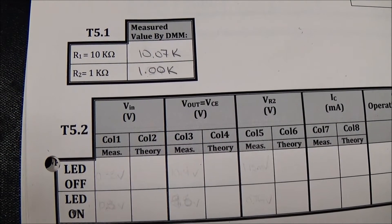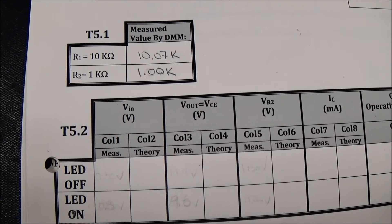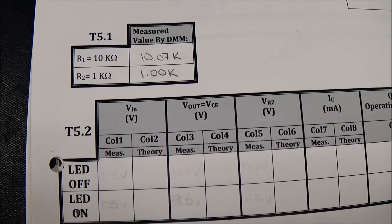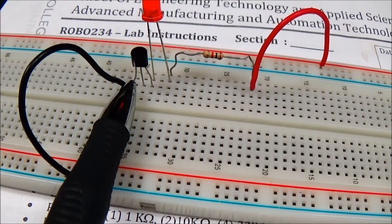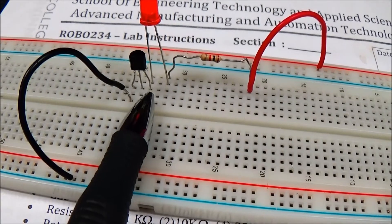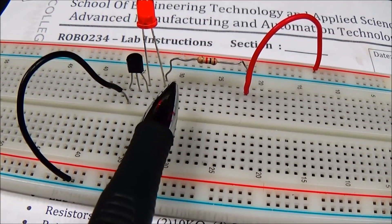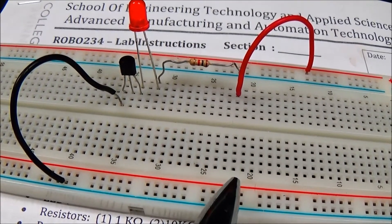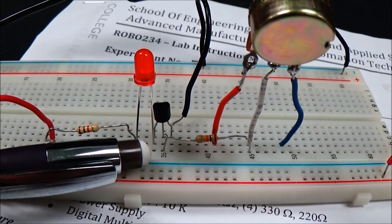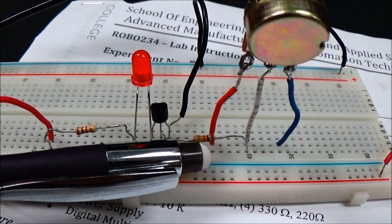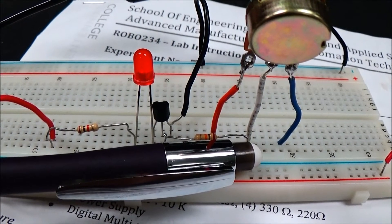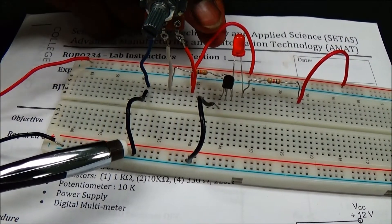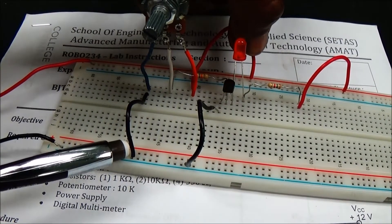Measuring R1 and R2: R1 is 10 kilohms, the measured value from the DMM is 10.07 kilohms. R2 is 1 kilohm and it measured exactly 1 kilohm. The transistor emitter is grounded, the collector is getting the negative of the LED, and the positive of the LED gets the 1 kilohm resistance. The other end of the resistor goes to the power supply positive. From the base, I have connected the 10 kilohm resistance to the center of the potentiometer. One end of the potentiometer is grounded and the other end goes to the supply.